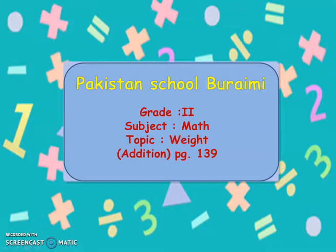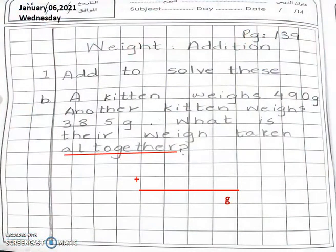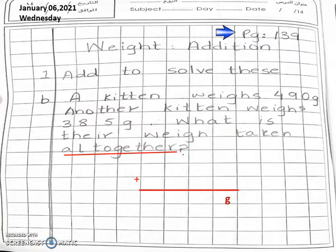Go to page number 139 in your notebooks. So quickly open your notebooks. First of all, write down the date and day. That is 6th January 2021, and the day is Wednesday. Page number is 139. Topic is weight and addition.